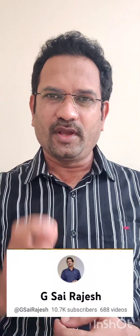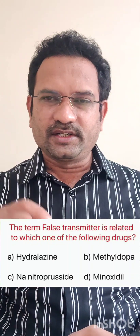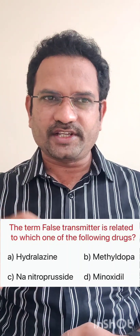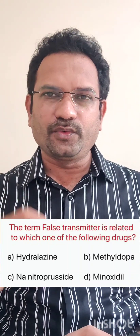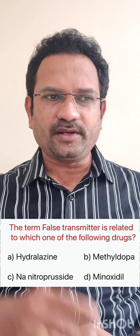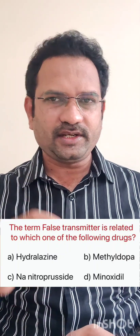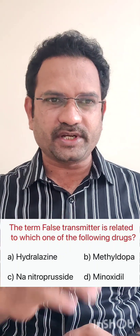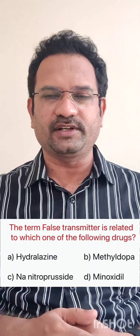Hello everyone. Welcome to the video on the concept of false neurotransmitter. In this video, I will explain a 2019 central drug inspector question. Look at the question first. The term false transmitter is related to which one of the following drugs? Options given are hydralazine, methyl dopa, sodium nitroprusside, and minoxidil.